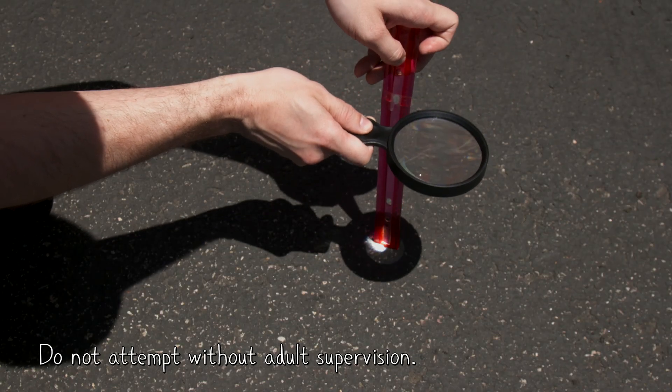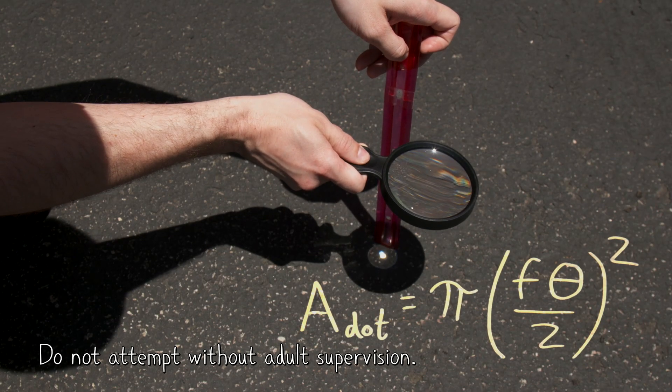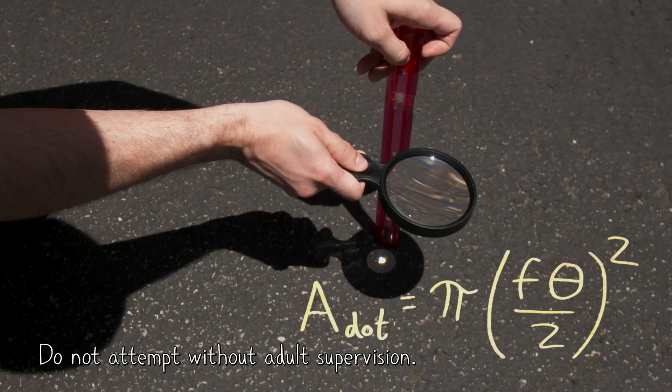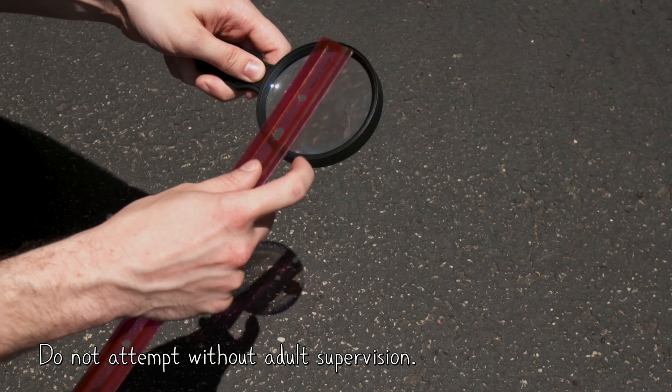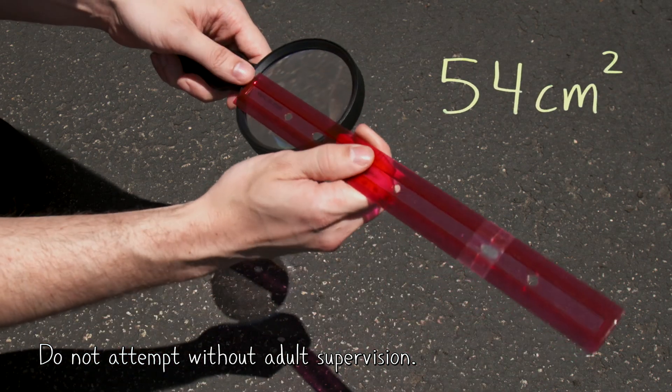I measured the focal length of the magnifying glass and used this equation to get an area for the image of the sun that it makes, and the circle symbol there is just the angular diameter of the sun from Earth. I then measured the area of the magnifying glass to be about 54 square centimeters. When you divide these two areas, you get our concentration factor, which for this specific magnifying glass is 1560, over 1500 times the intensity of normal sunlight.